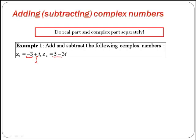If we want to find z1 plus z2, we have minus 3 plus i plus 5 minus 3i. If we join like terms, we have real part with real part: minus 3 plus 5 gives 2, and then imaginary part with imaginary part gives minus 2i.